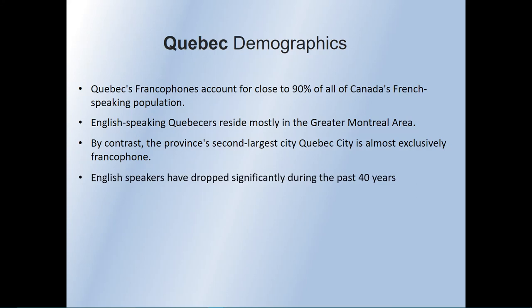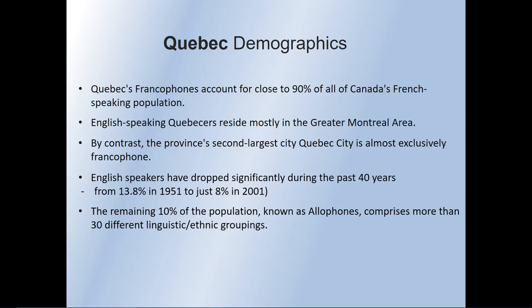English speakers have dropped significantly in the past 40 years. Historically, anglophones held a lot of power here, but that has dropped off considerably. From 13.8% in 1951, it's down to about 8% today — possibly slightly different due to immigration and refugees, some of whom speak more English than French. The remaining 10% of the population, known as allophones, comprises more than 30 different linguistic groups, showing quite a bit of diversity in Quebec.